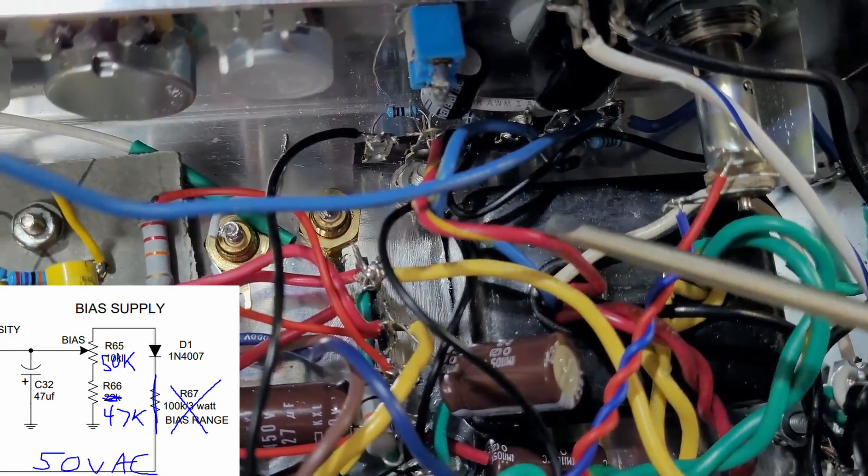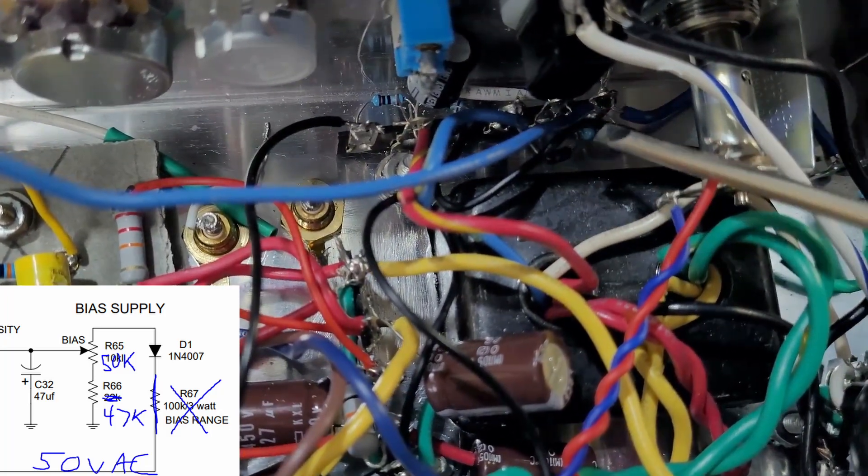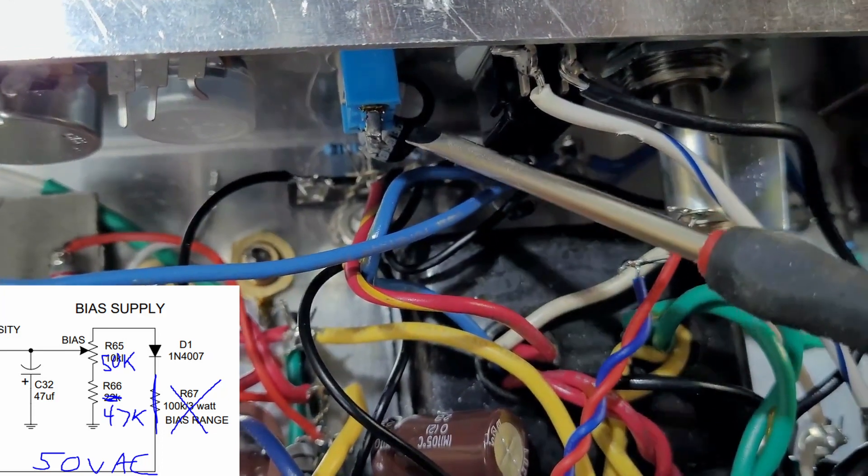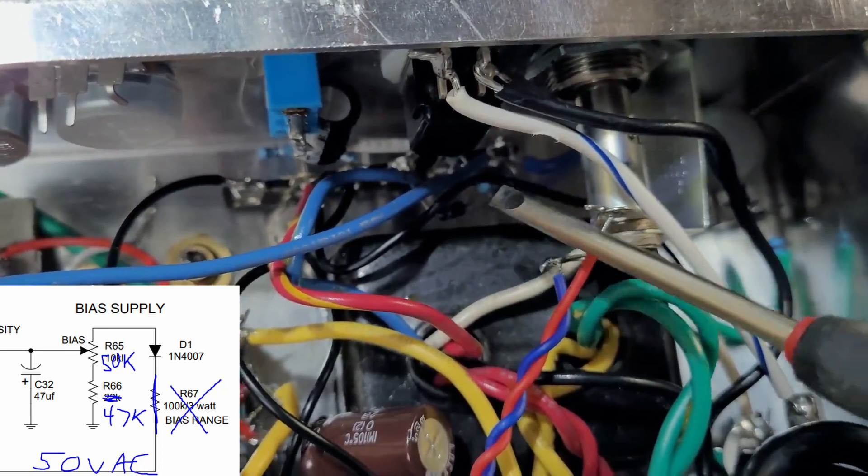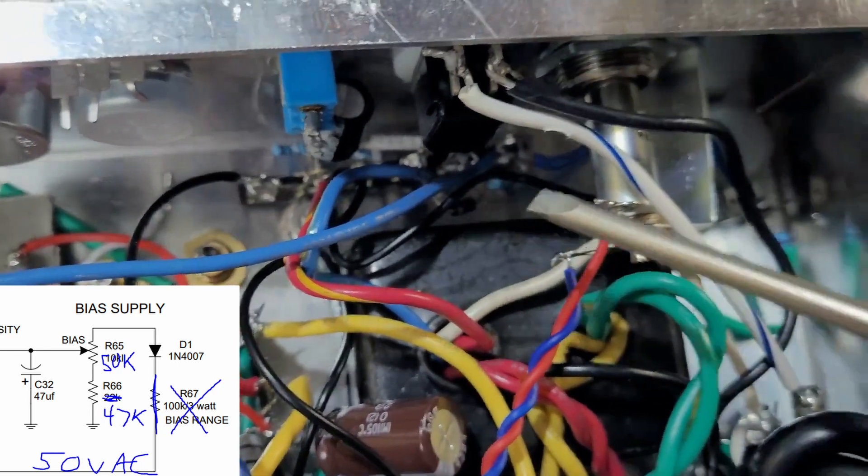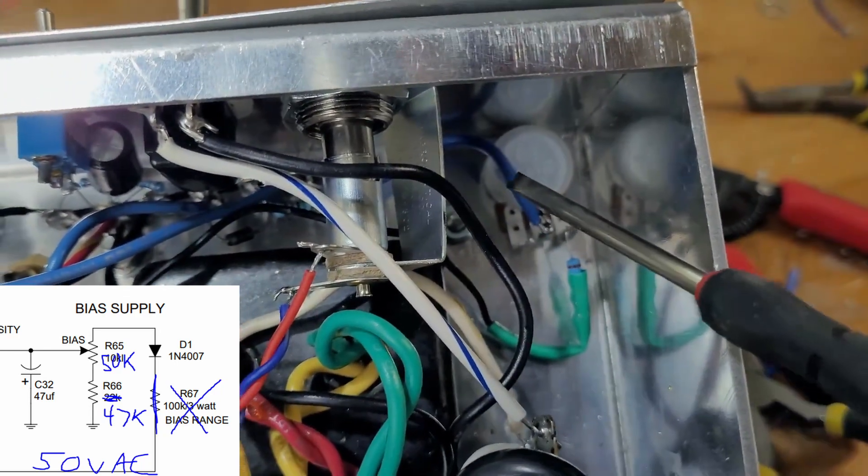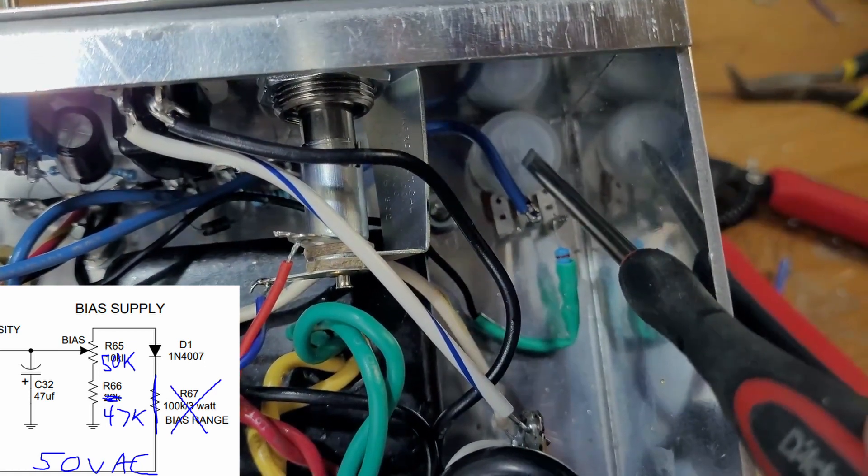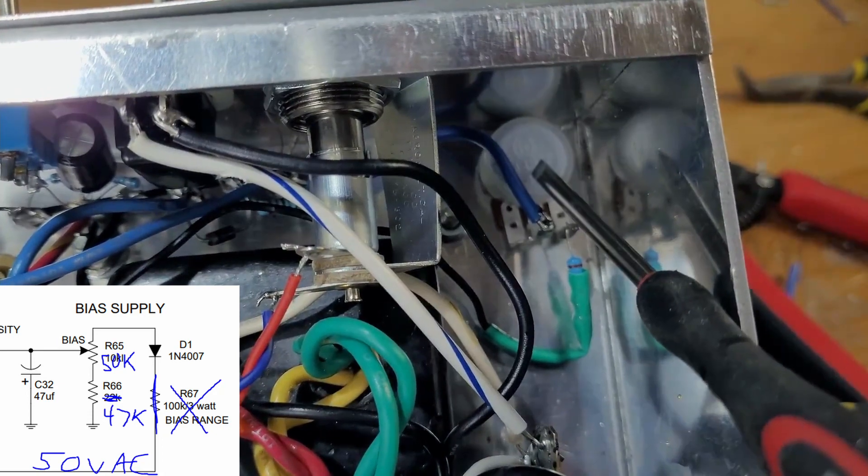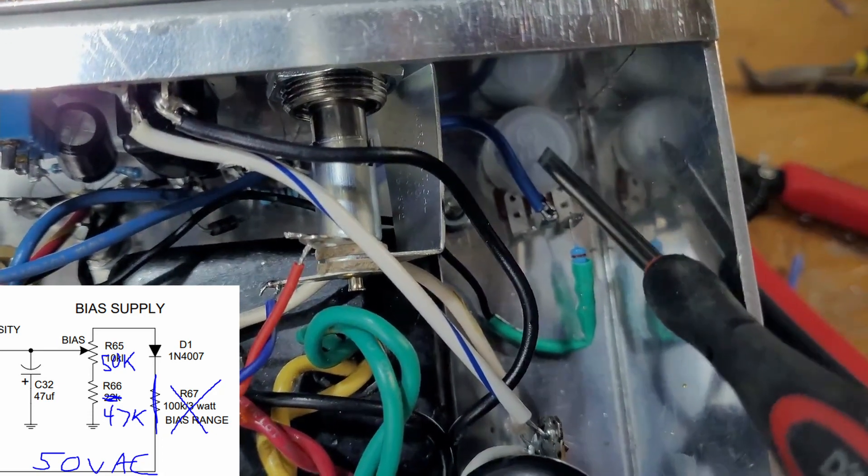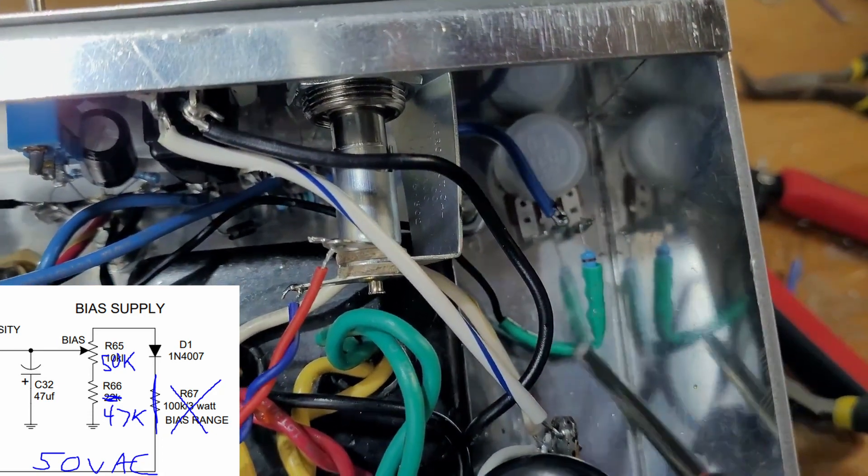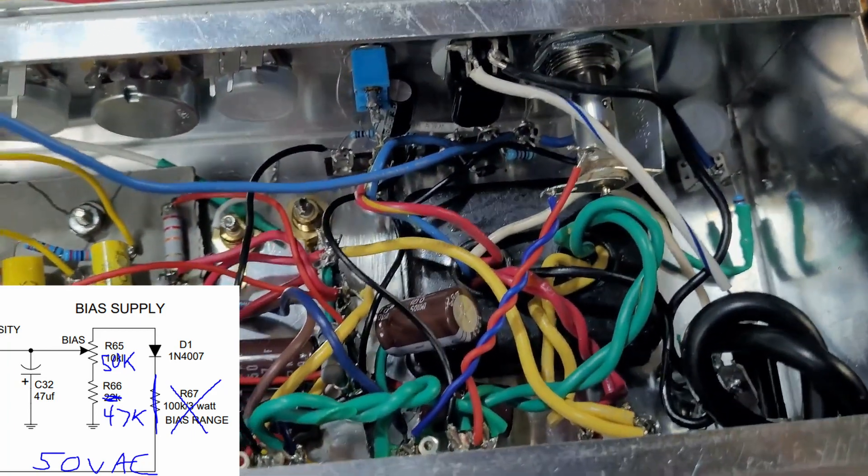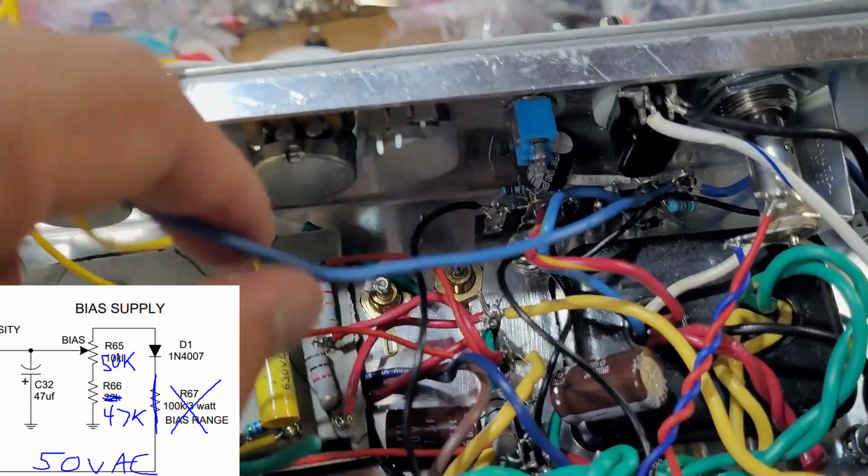So again, the 58 volts AC goes in here. It gets rectified to DC here. It gets smoothed by this filter cap here. It gets dropped a little from that resistor right there. Then it runs on this blue wire here. And this is my adjustable fixed bias potentiometer, 40, 50K. Then we've got a 50K resistor here to ground. So that's going to be my adjustable fixed bias circuit. And then that's going to run off of this blue wire here to feed to the tremolo pot.